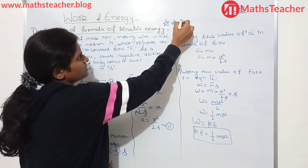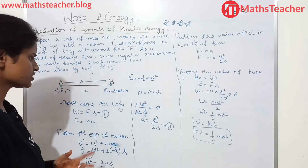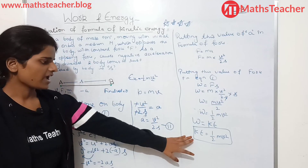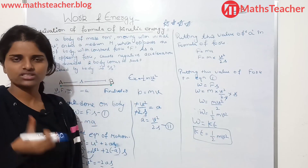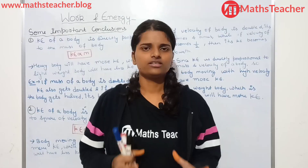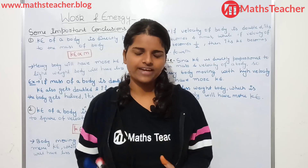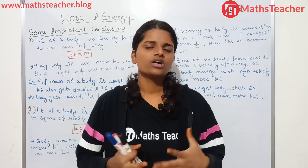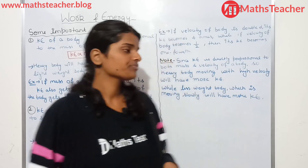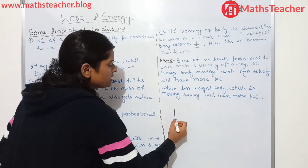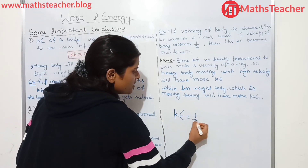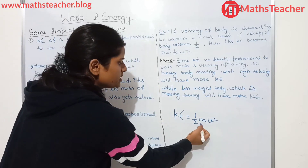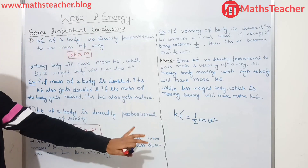Now let's see some important conclusions which we have derived from kinetic energy: KE = half mv², where K means kinetic energy, M means mass of the body, and V represents velocity.